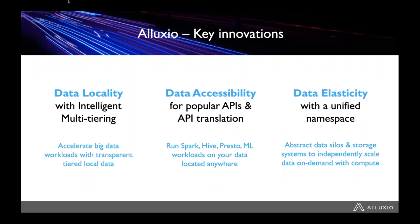We've talked about how Alexio can help with these things, but not the why. We're going to look at a few key innovations within Alexio — how it works — so you can understand how it addresses these challenges. The key innovations are data locality, data accessibility, and data elasticity. We'll look at what each of these means in the context of Alexio helping with a big data framework and a storage layer.